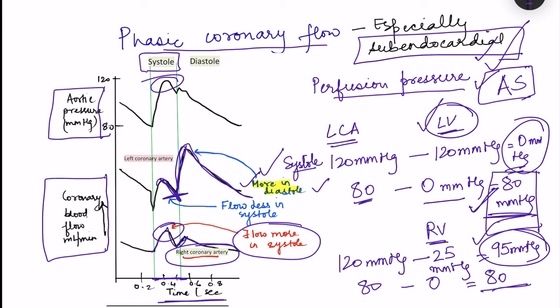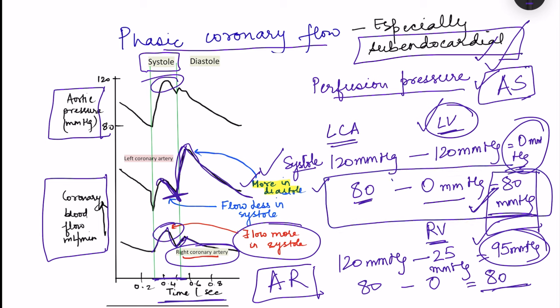In aortic regurgitation, the aortic valve does not close properly, so during diastole blood flows back into the left ventricle. This is harmful for coronary circulation because diastole is when perfusion pressure maintains coronary flow. When blood flows back, diastolic pressure decreases significantly, reducing the perfusion pressure during diastole and compromising coronary circulation — making the person more prone to ischemia.